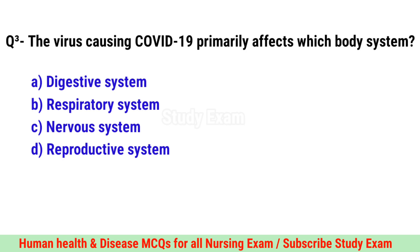Question No. 3. The virus causing COVID-19 primarily affects which body system? Right option is B. Respiratory system.